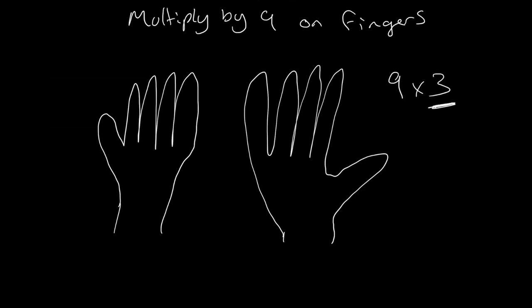So 3 becomes the important number here. It only works for nines. From the left to the right, we then take our third finger, which is this one here, and we would fold it over.